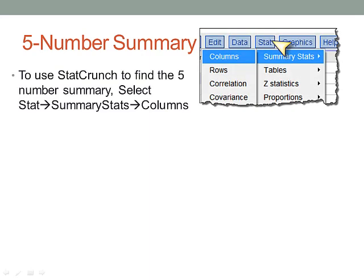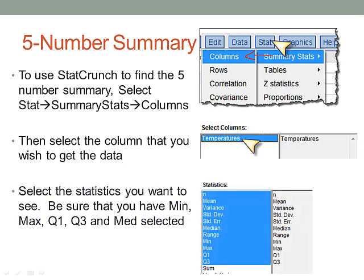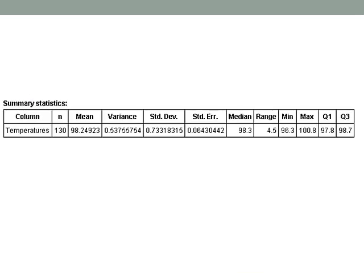If you're gonna use StatCrunch to crunch this out, go to STAT, and then select SUMMARY STAT, and then COLUMNS. Then select the column that you want to get the data. Ours is the temperature for the body temperature. And then make sure that all these values are in there: the min, max, Q3, and the median. Just make sure you've selected all those. They are usually selected by default.